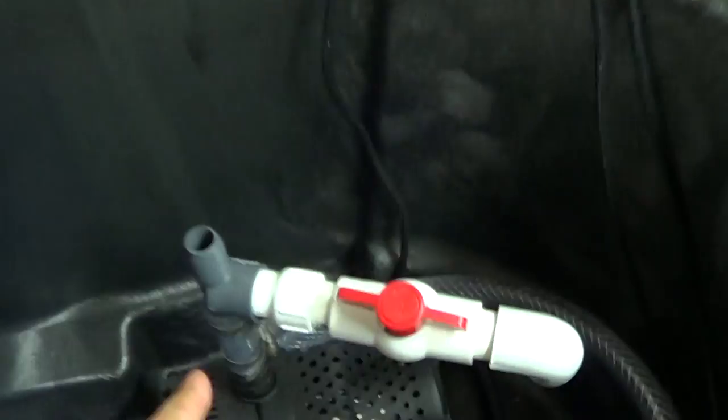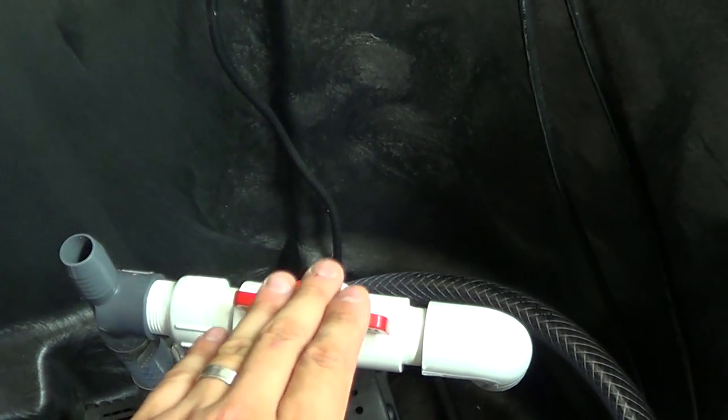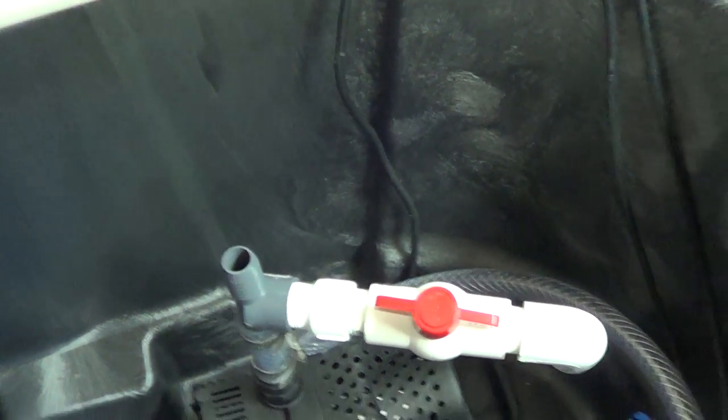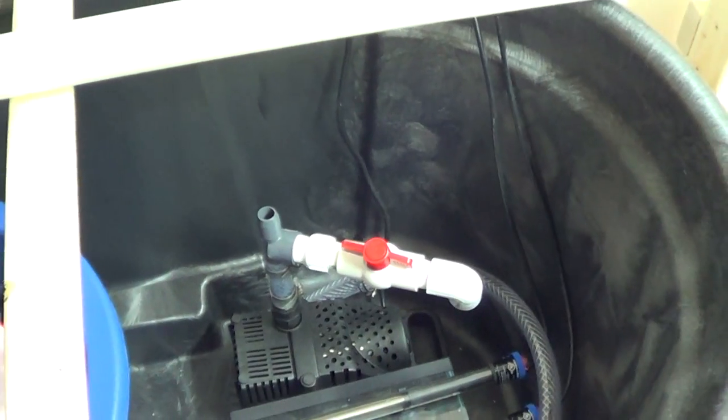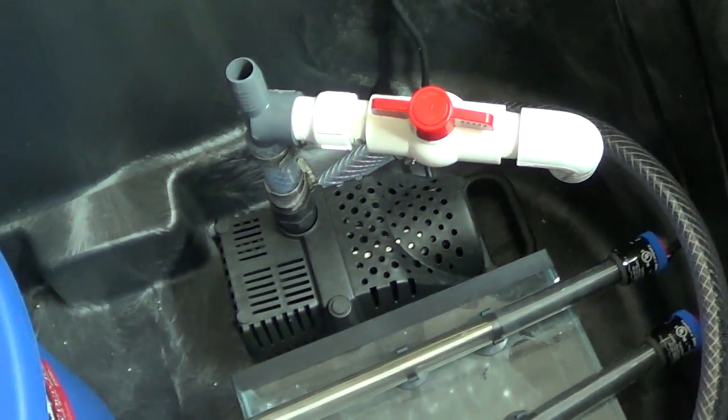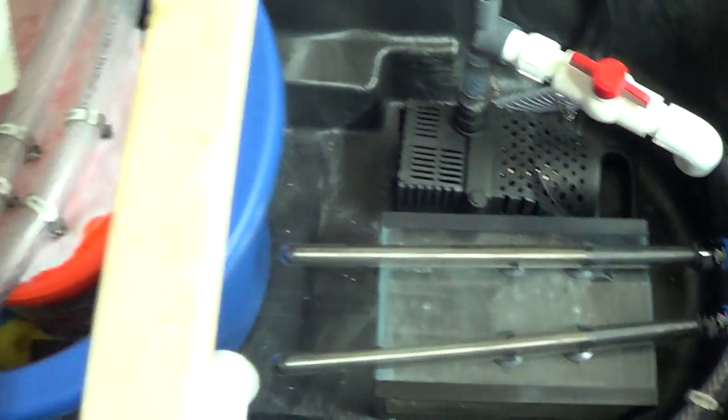I'm also putting a ball valve here, so that I can fine-tune what percentage of the water comes out the bypass versus what percentage of the water actually makes it to tanks, which should give me complete control over this pump that I have, even though it is a little bit too strong for what I'm trying to do.